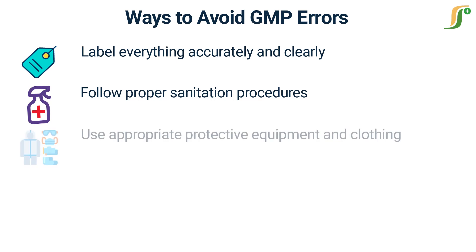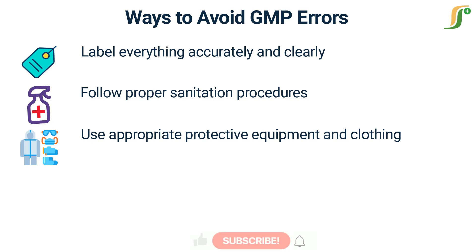Use appropriate protective equipment and clothing. Using appropriate protective equipment and clothing is essential for ensuring employee safety and preventing contamination. This includes wearing gloves, masks, and other protective gear as needed, and ensuring that all equipment and clothing are clean and free of contaminants.